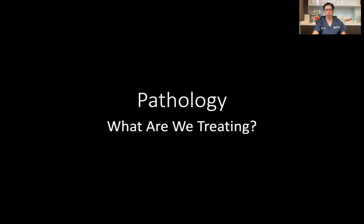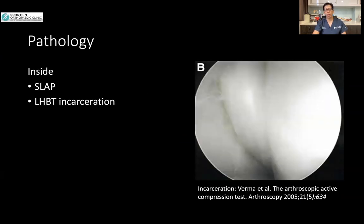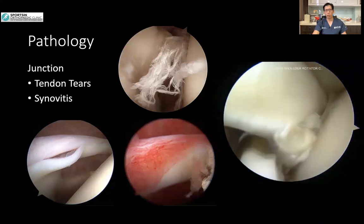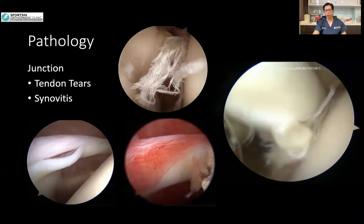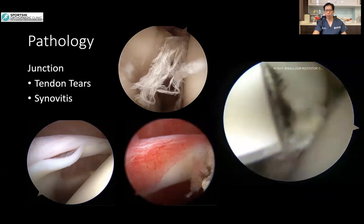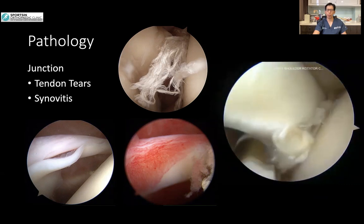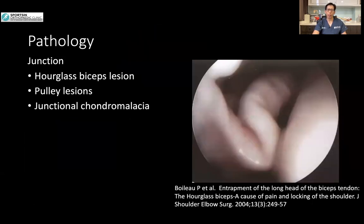Once we know what we're treating, that will affect our decision making and surgical plans. In the inside zone, the main pathologies are SLAP lesions, superior labral lesions, and incarceration of the long head of biceps tendon — where internal rotation and adduction of the shoulder causes the long head of biceps tendon to become incarcerated between the glenoid and the humeral head. In the junctional region, you can get tears of the tendon and synovitis. As seen in the video, this is a tear in the long head biceps tendon as it turns around the bicipital pulley to go into the groove.